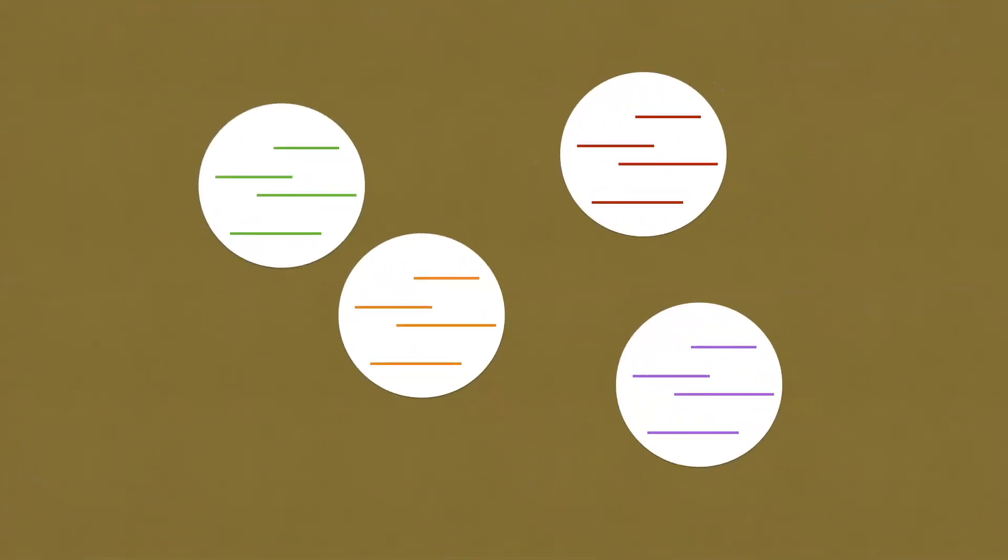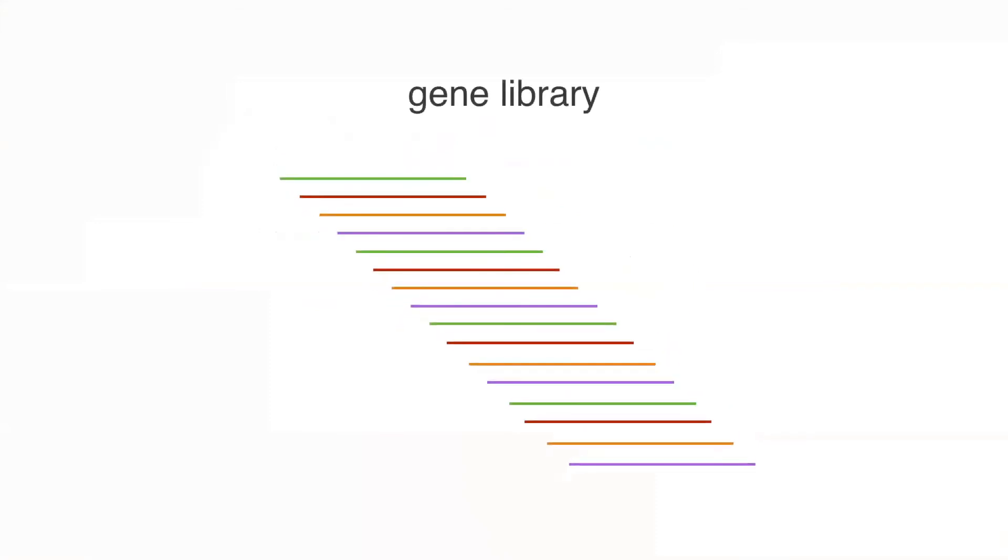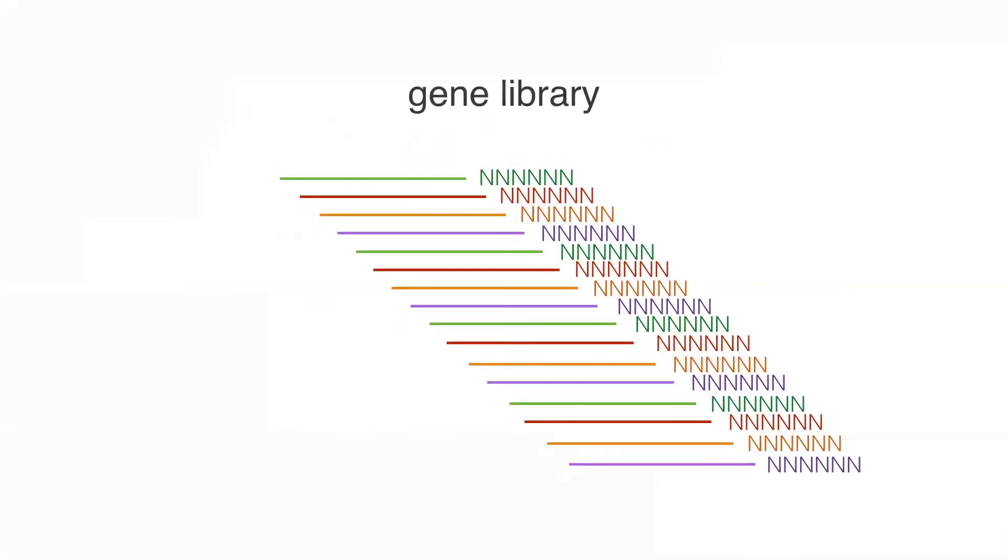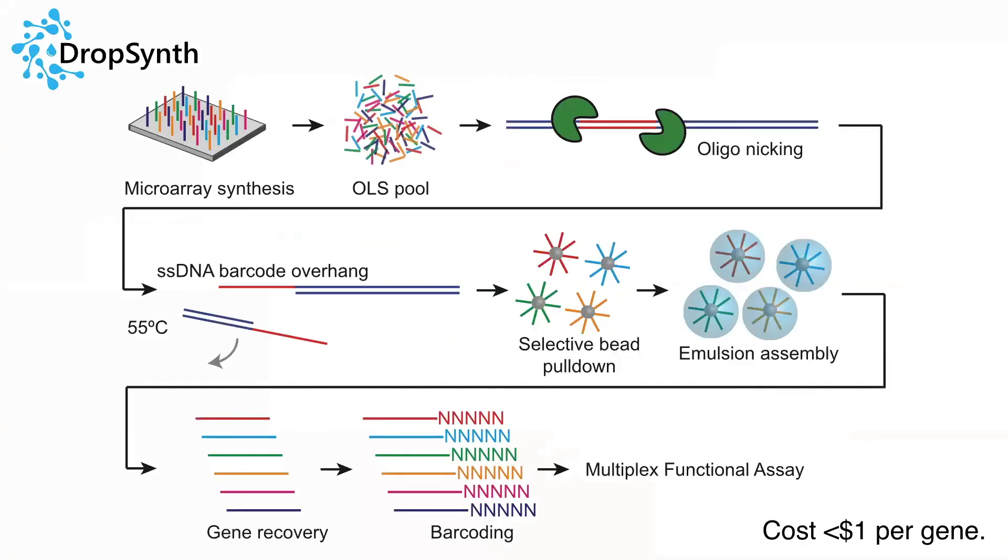And after assembly, we basically just break the emulsion and recover our original design library. And then we go in and actually uniquely barcode each of the resulting molecules. So this entire process shown here basically takes about one to two weeks, and at the moment costs about less than $1 per gene for lengths of about 500 to 700 base pairs.